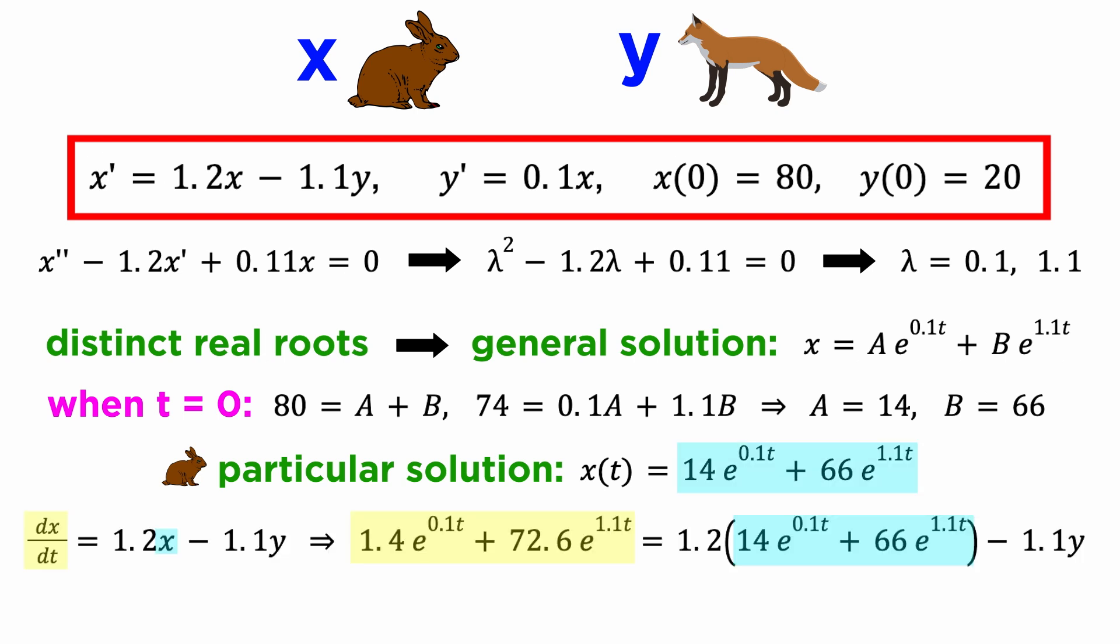The second method seems a little easier, so let's work through the algebra, and we get our function y of t. With that we have completely solved the problem, obtaining a mathematical model for the rabbit and fox populations over time.